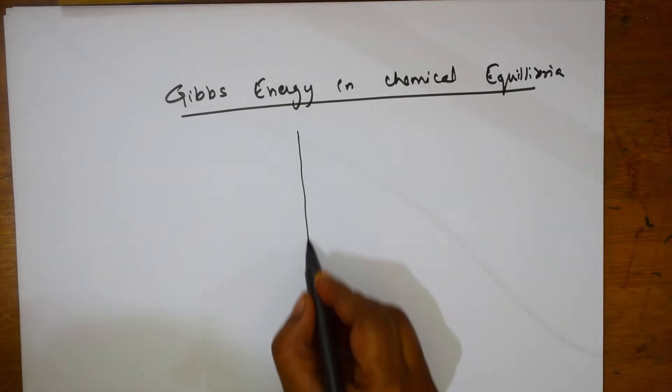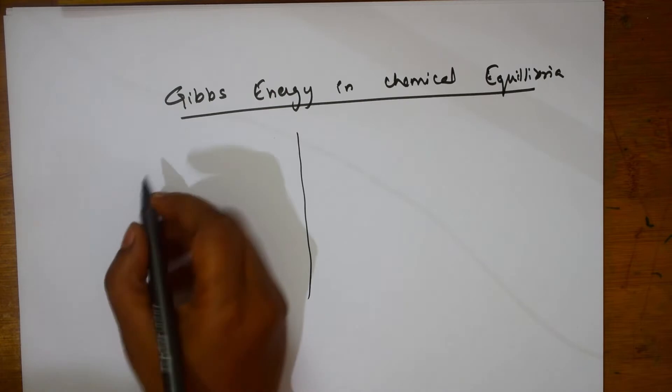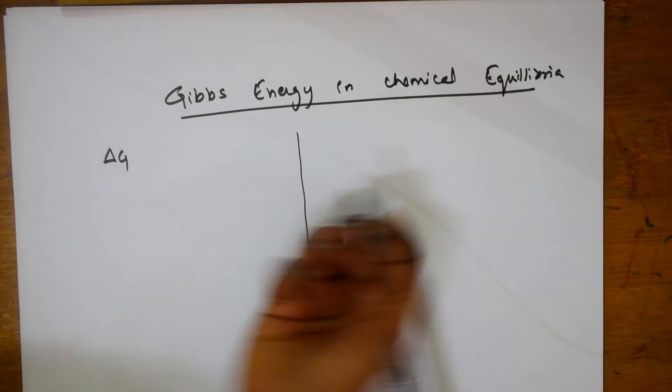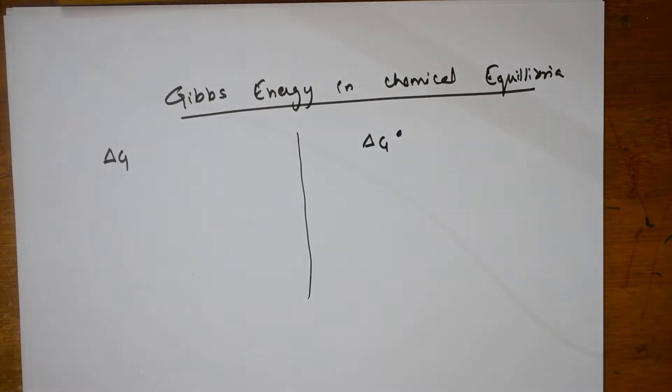Whenever you are speaking about Gibbs Energy, two important things you have to remember. You need to remember the formula for Delta G as well as Delta G naught. Both things you need to remember.